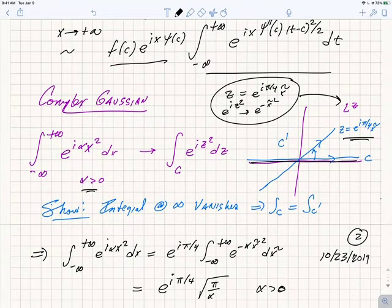In order to do that, we basically have to show that the integral at infinity that comes from connecting these contours together vanishes. I'll leave that as an exercise to the reader. It's not too hard to show why.